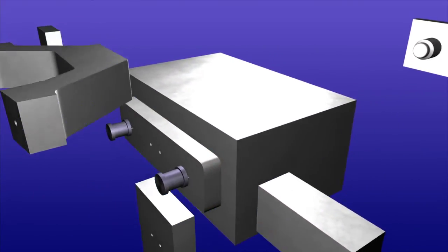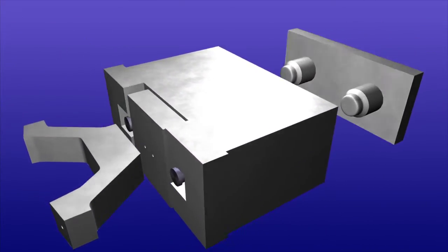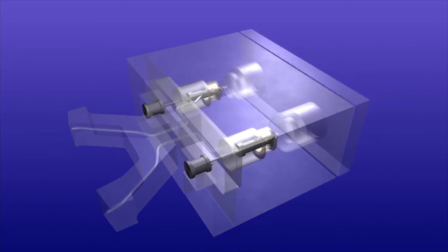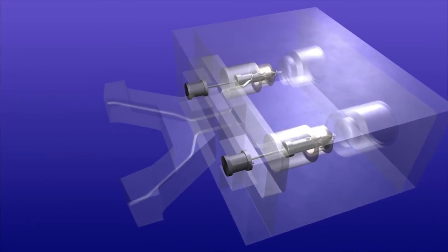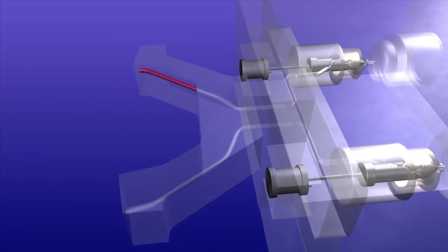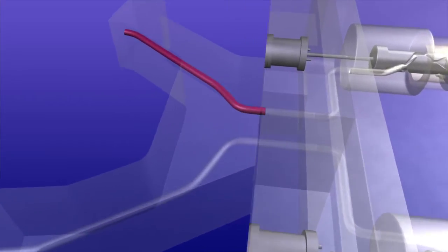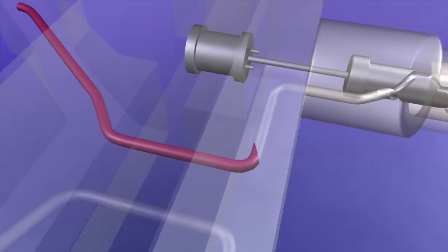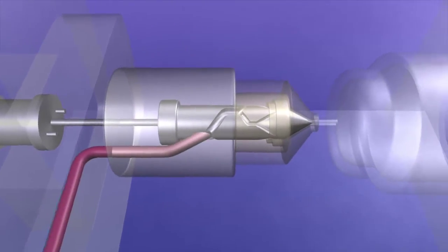The overmolding process involves the use of distinctly different materials to form one cohesive component. Overmolding adds immeasurable value to product design by enhancing the end user's experience in terms of comfort, ergonomics, and ease of use.